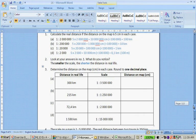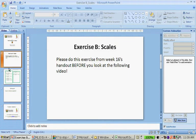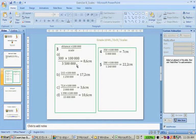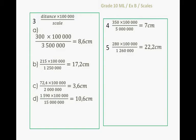Next: determine the distance on a map, rounded to one decimal place. 300 kilometers in real life, scale 1 to 3.5 million. I first have to convert 300 kilometers into centimeters, so I multiply by 100,000, then divide by the scale of 3.5 million. 300 times 100,000 divided by 3,500,000 gives me 8.5 centimeters.